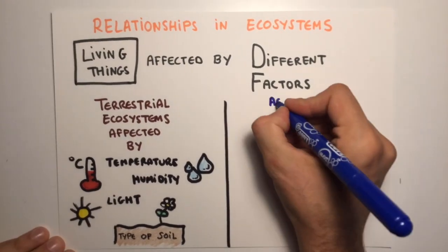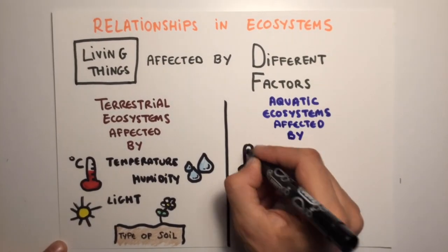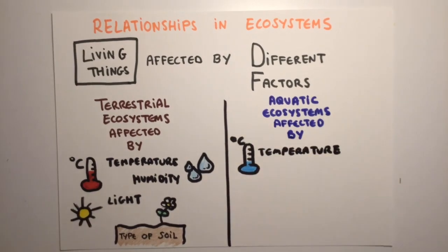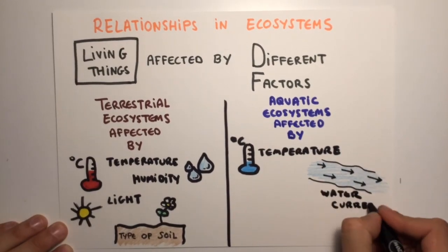In aquatic ecosystems, the main factors are temperature, water currents, light and salt content.